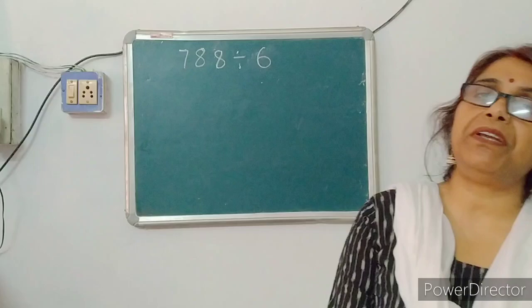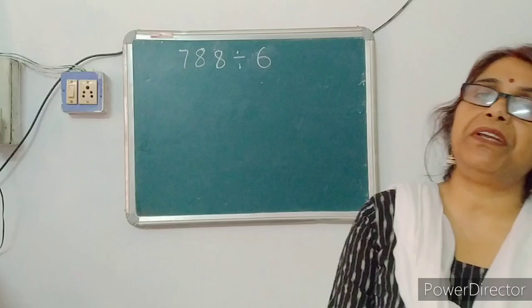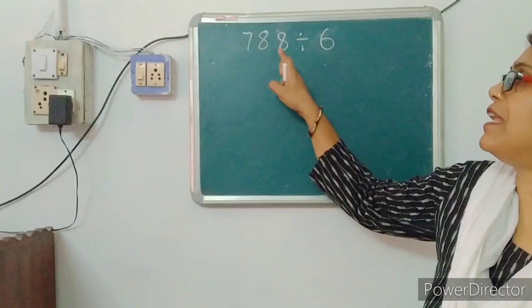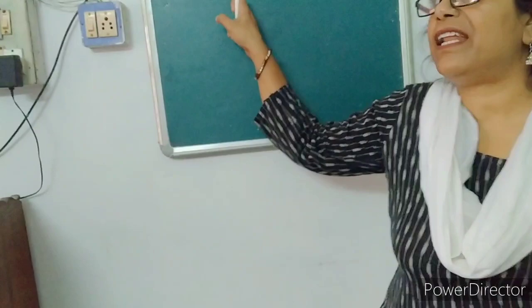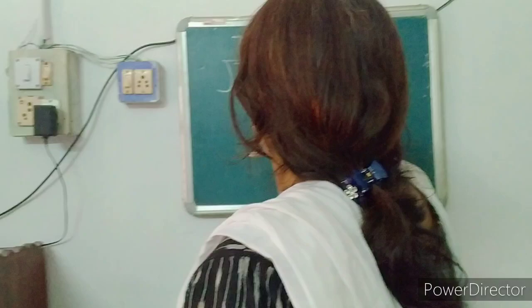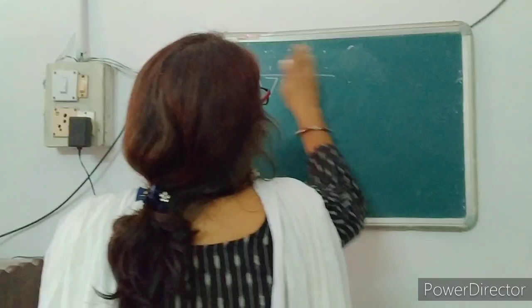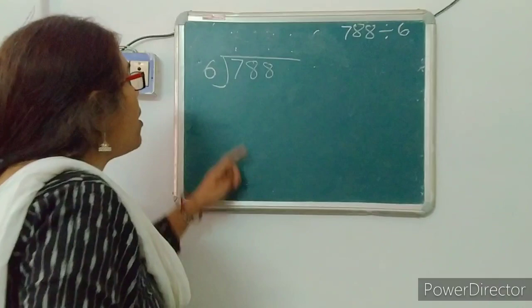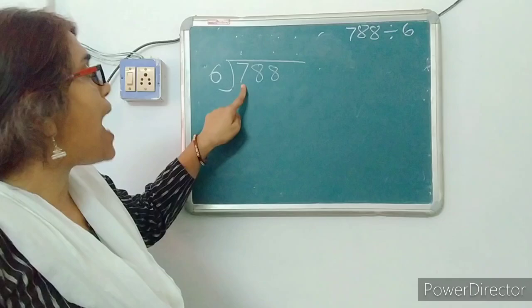Now I am going to explain how to divide a number by a single digit. Here, the sum is 788 divided by 6. Dear children, 788 is the dividend. We have to divide by 6. The divisor 6 is a single-digit number. First, we will take the first digit and compare the number with the divisor.